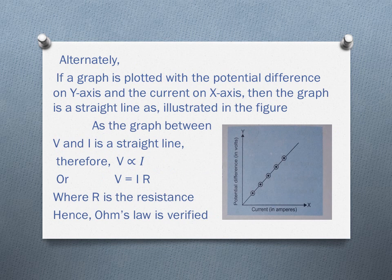Alternately, if the graph is plotted with the potential difference on the Y-axis and the current on the X-axis, then the graph is a straight line as shown in this figure. As the graph between V and I shows a straight line, therefore V is directly proportional to I, or V equals IR, where R is the resistance. Hence Ohm's law is verified. The slope of the graph, that is Y-axis divided by X-axis, V by I, gives the magnitude of resistance of the conductor in ohms.